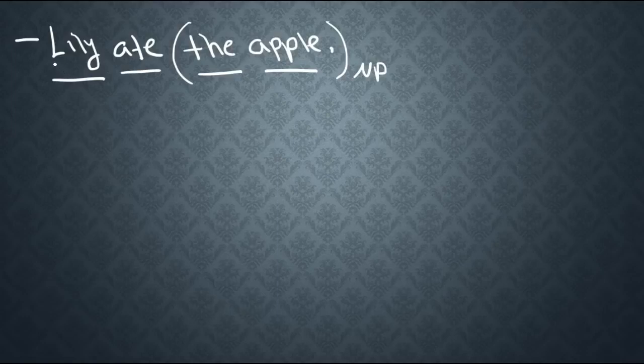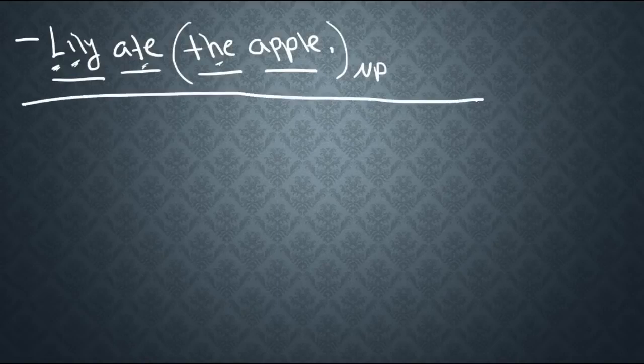But going on to a little smaller level, we have sounds. So L is a sound, T is a sound, TH is a sound. So all of these components combined together to create language.